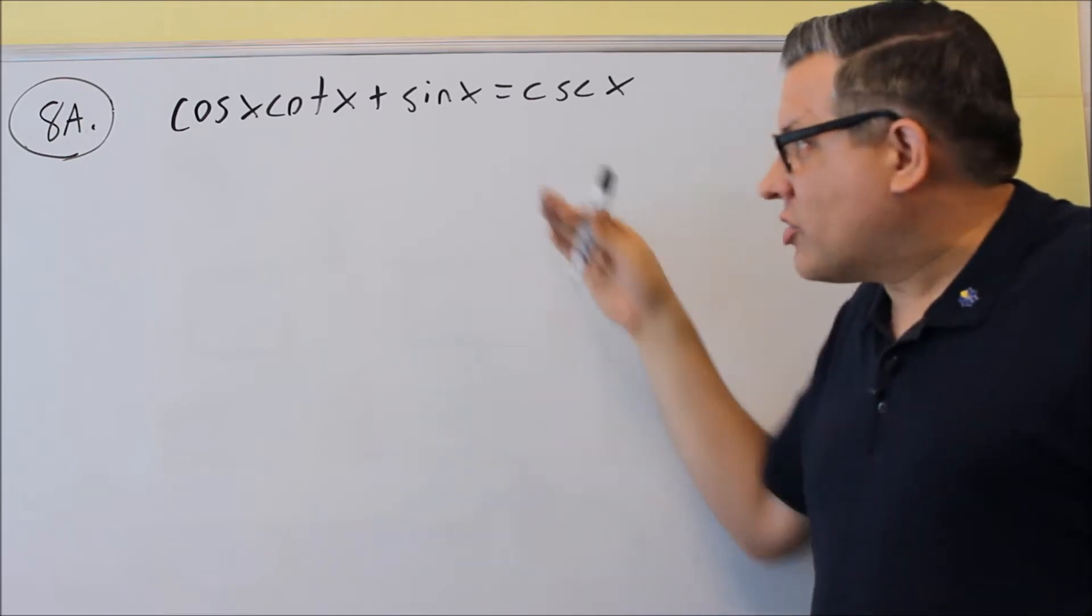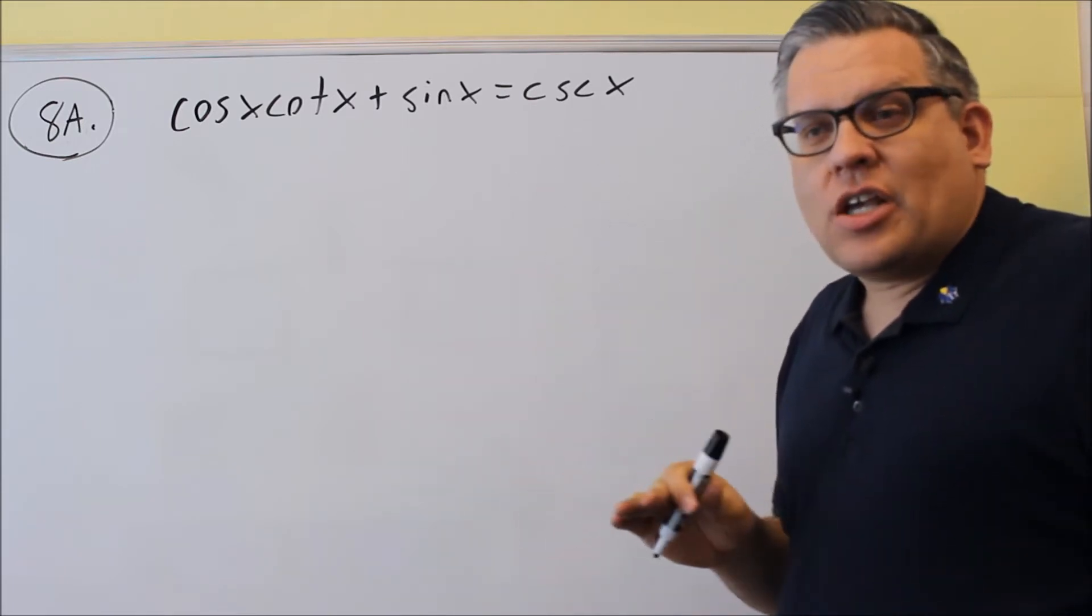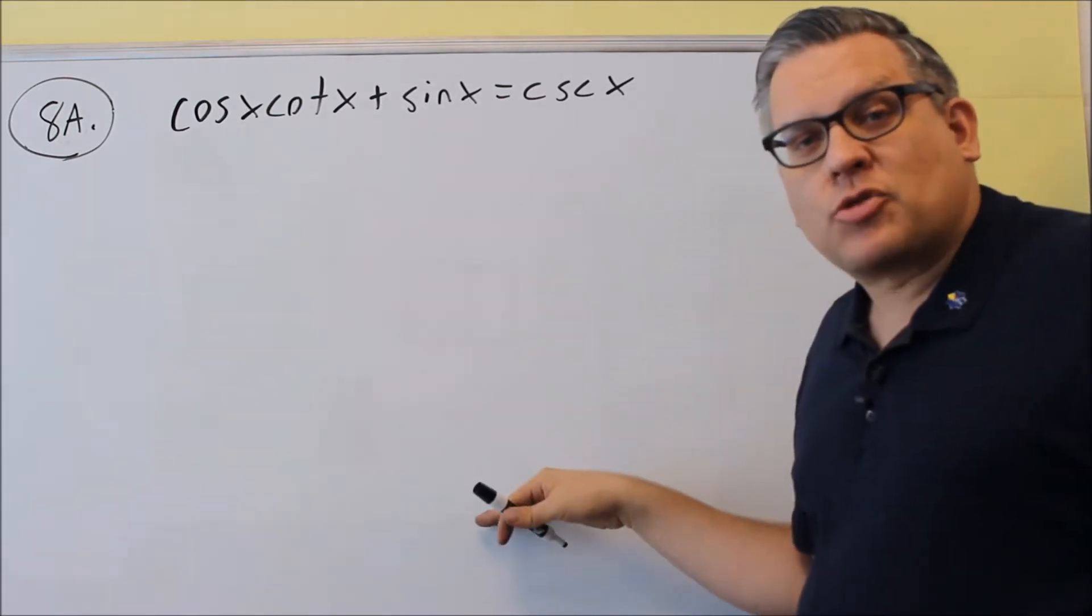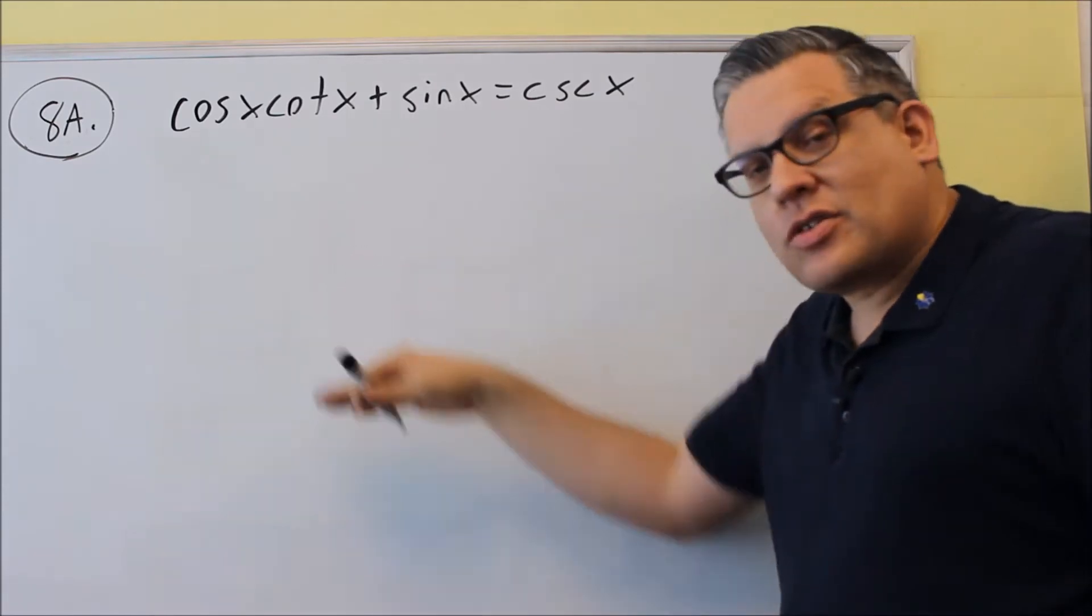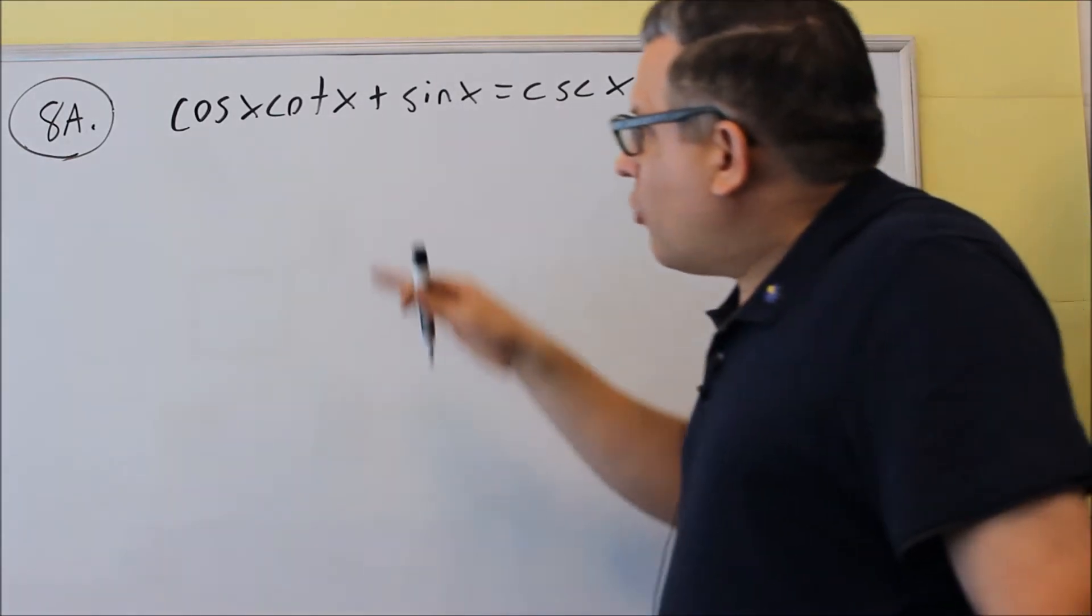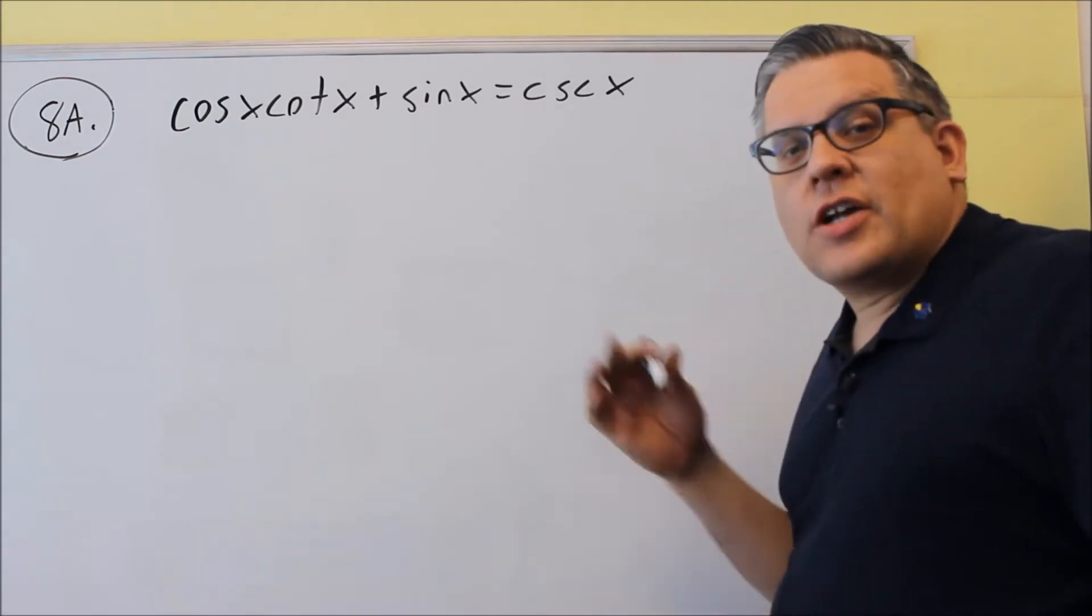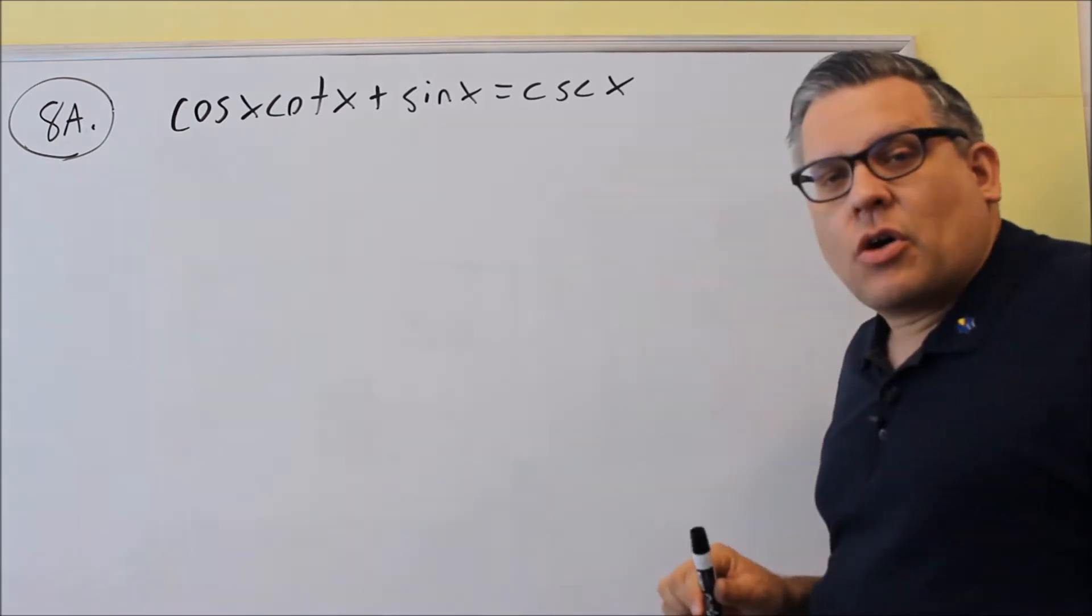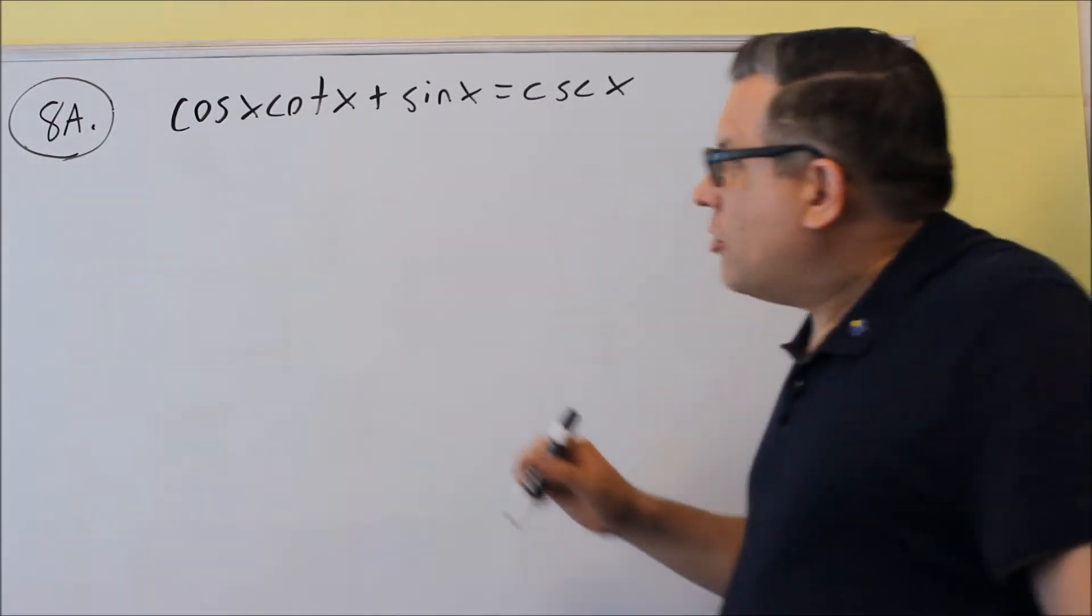Now, you don't have to label your steps. You don't have to put I used a Pythagorean identity or I used quotient or something like that. You don't have to label your steps when you do that here. You can just go ahead and write the steps out, and as long as it's done correctly, then that's fine. With these kind of problems, there's different strategies that you can try and do. The first strategy would be to change everything into sines and cosines. So that's going to be the first step that I'm going to do.